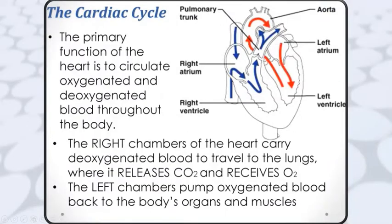So this is the picture of the heart. The blue color arrow shows the deoxygenated blood. From the inferior vena cava and superior vena cava, blood enters into the right atrium, then into the right ventricle, and through the pulmonary artery it enters the lungs for the oxygenation process, where carbon dioxide is released and the level of oxygen is increased.